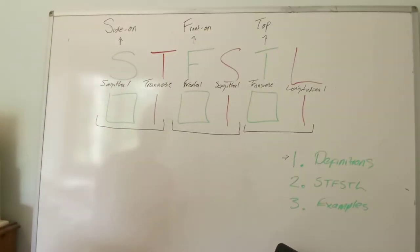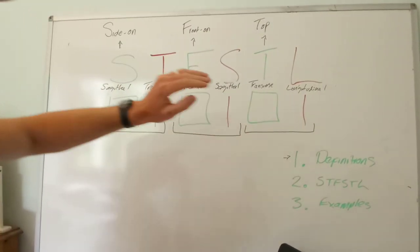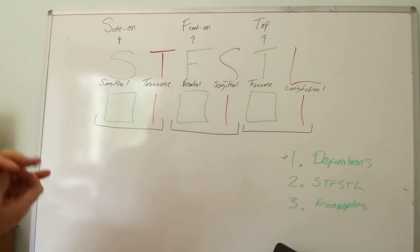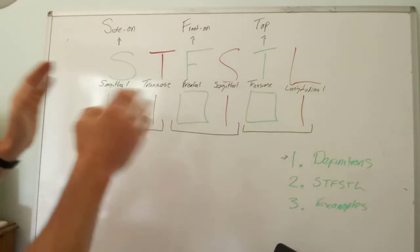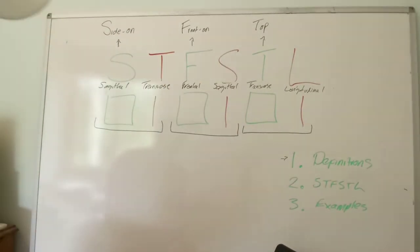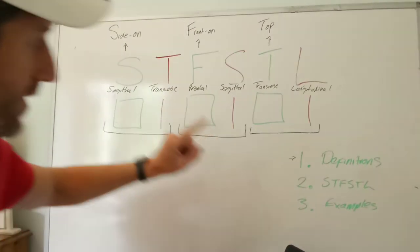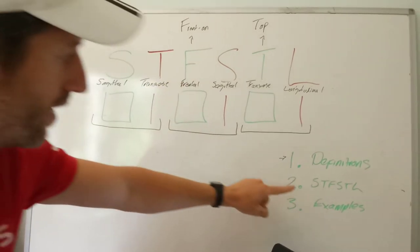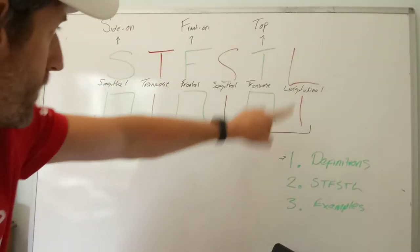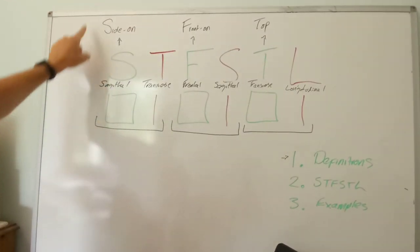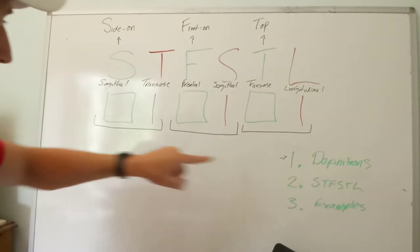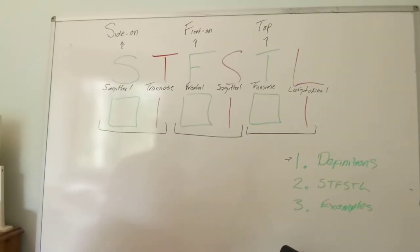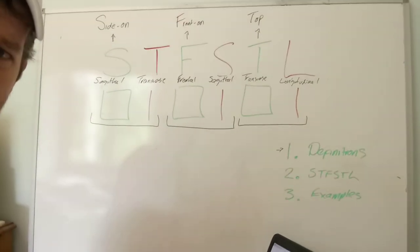So we've gone through definitions. On your revision card, on one piece of A4, write down all the definitions of the planes and the axes. Then draw a copy of the diagram, and think of some examples.